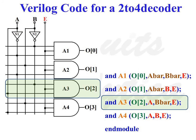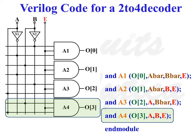The line 'and A3 (O2, A, B_bar, E);' specifies the instantiation of an AND gate labeled A3 whose output is connected to output port O2, with inputs connected to input port A, wire B_bar, and input port E. The line 'and A4 (O3, A, B, E);' specifies the instantiation of an AND gate labeled A4 whose output is connected to O3 and whose inputs are connected to input ports A, B, and E.